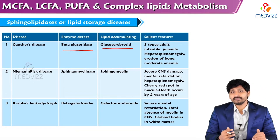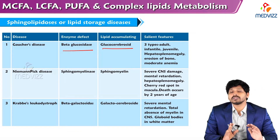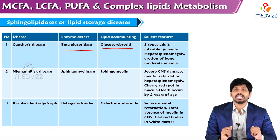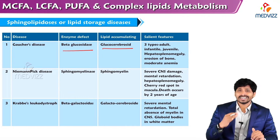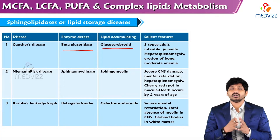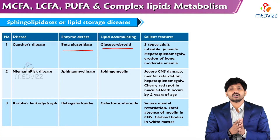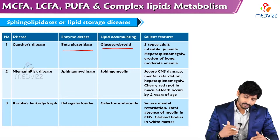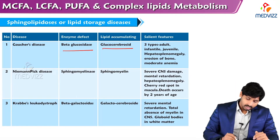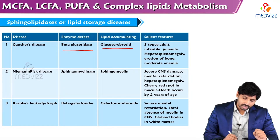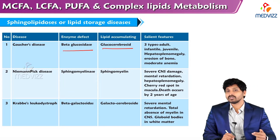The second is Niemann-Pick's disease, caused by deficiency of the enzyme sphingomyelinase. The lipid accumulating is sphingomyelin. There is severe central nervous system damage, as sphingomyelins play a major role in making neurons and nerve cells. The main affected organ is the central nervous system, leading to mental retardation. Other features include hepatosplenomegaly, cherry red spot in macula, and death occurs by the second year of age.